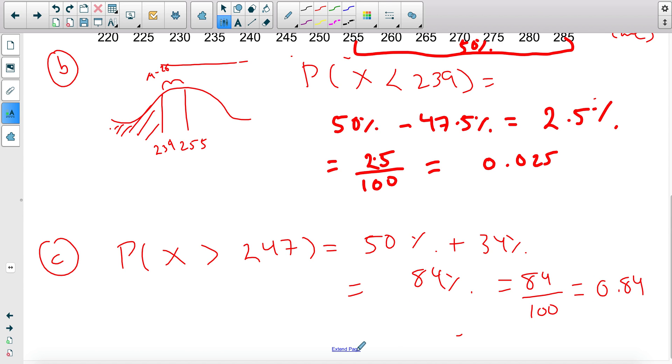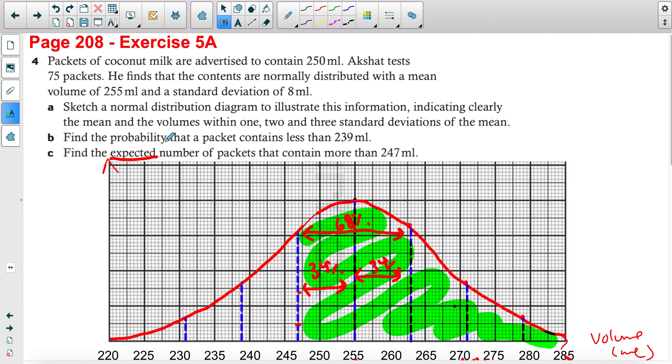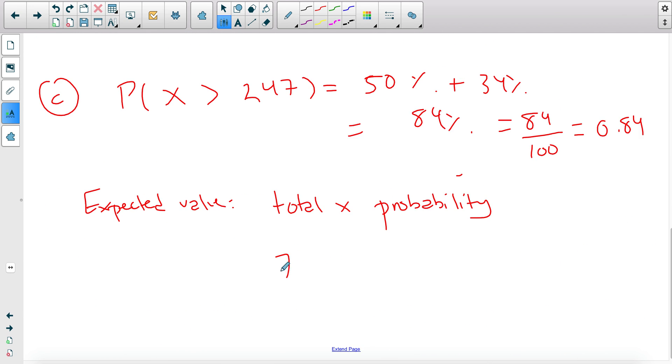Now this is not our final answer because they wanted the expected value. To find the expected value, you take your total and multiply it by the probability. The total comes from the main question—in here it's 75 packets. So 75 packets multiplied by 0.84 will give you 63 packets.